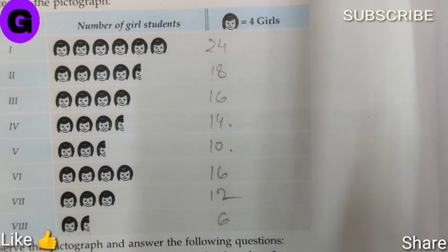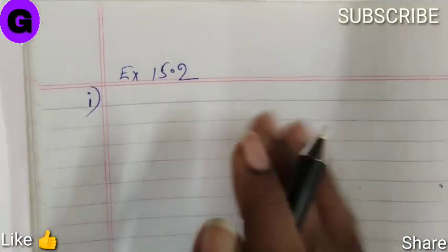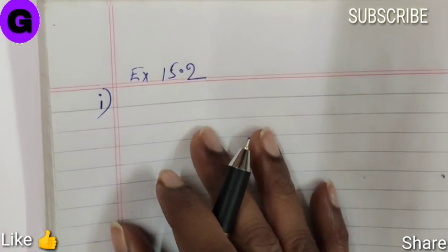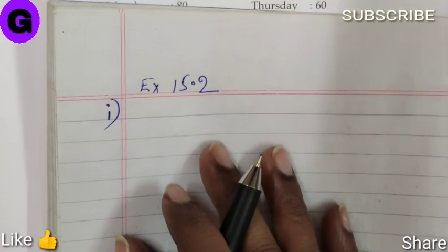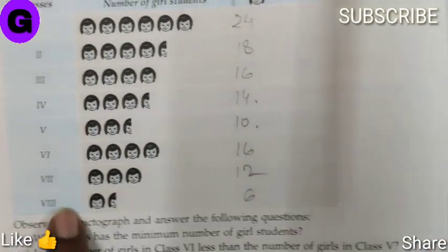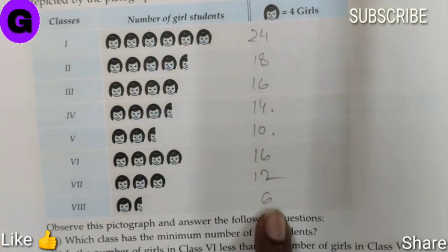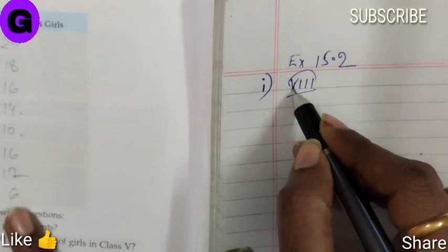Question 1 part i: Which class has the minimum number of girl students? Minimum means the smallest, the least number. That is no doubt class 8, which has only 6 girls in total. So the answer is class 8.